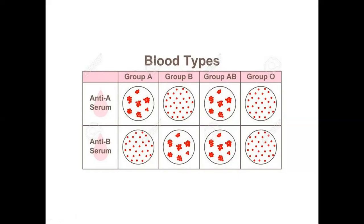To determine the blood group, we use anti-sera A and anti-sera B. If the patient has blood group A and we add anti-sera A, agglutination of RBCs will occur, while anti-sera B causes no agglutination. For blood group B, anti-sera A causes no agglutination while anti-sera B causes agglutination. For blood group AB, as both antigens are present, agglutination occurs with both anti-sera. For group O, no antigen is present so no agglutination occurs. Group AB can be a universal recipient and group O can be a universal donor.